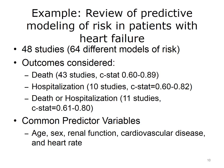The 43 models of death had C statistics, discussed in Lecture A, of between 0.60 and 0.89. The 10 models of hospitalization had slightly lower C statistics of 0.60 to 0.82. The 11 studies where models predicted death or hospitalization had C statistics between 0.61 and 0.80. The most common predictor variables included age, sex, renal function, cardiovascular disease, and heart rate.